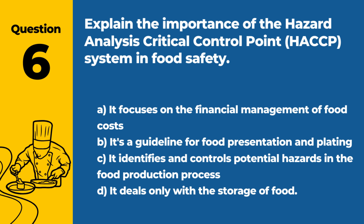Question 6: Explain the importance of the Hazard Analysis Critical Control Point (HACCP) system in food safety. a. It focuses on the financial management of food costs. b. It's a guideline for food presentation and plating. c. It identifies and controls potential hazards in the food production process. d. It deals only with the storage of food. Answer: c. HACCP is crucial in food safety for systematically identifying, evaluating, and controlling hazards in the food production process.